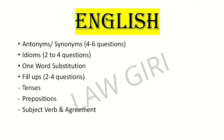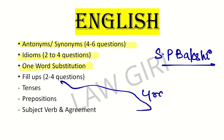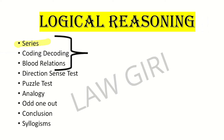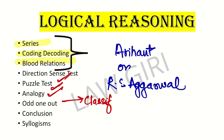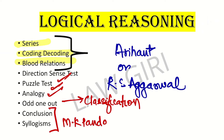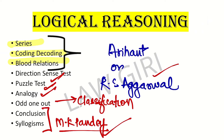For English, synonyms are very important. You can use idioms and one-word substitutions — you can buy a book and practice these. For grammar, cover tenses, prepositions, and subject-verb agreement, then practice fill-in-the-blanks and spotting errors. For logical reasoning, series, coding-decoding, and blood relations are very important. You can use Verbal and Non-Verbal Reasoning by R.S. Aggarwal. Also cover direction sense tests, puzzle tests, analogy, odd one out, and classification. For syllogisms, invest in a good book for clarity on those topics.